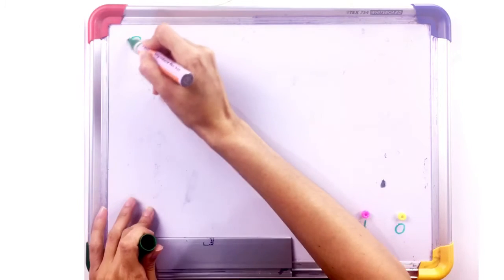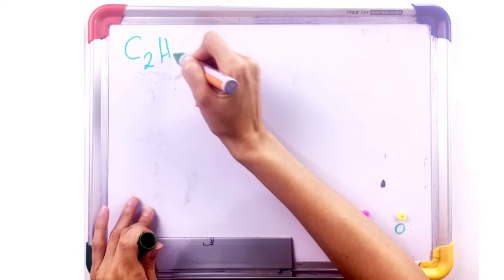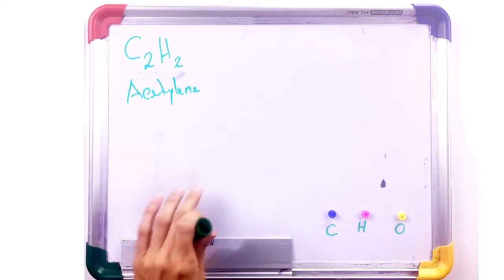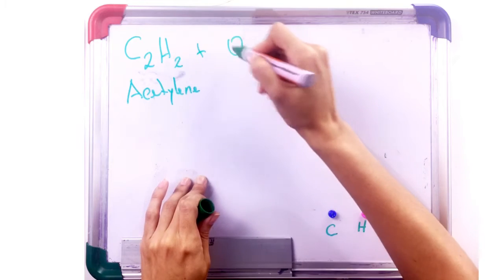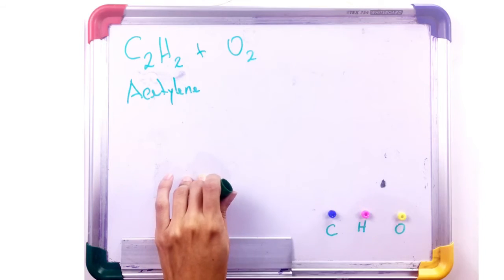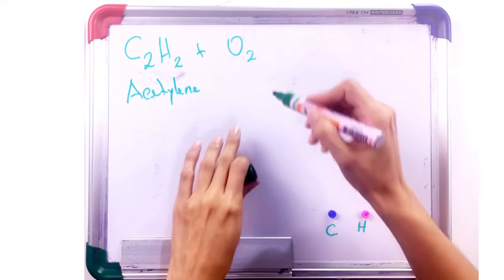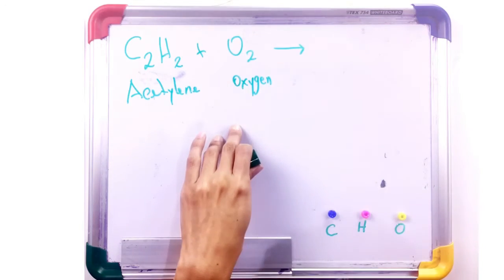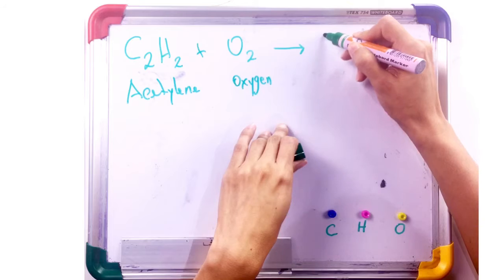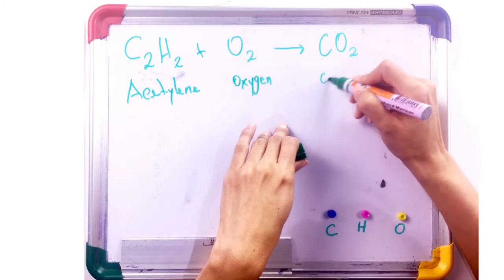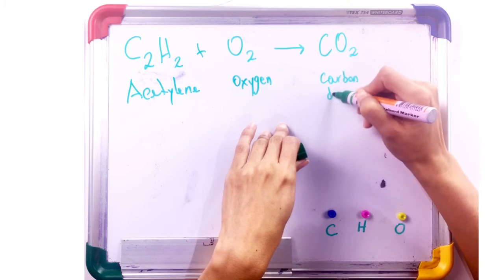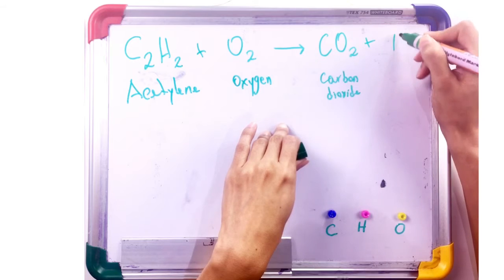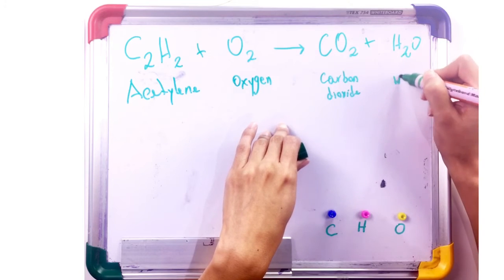Acetylene is written as C2H2. So we have acetylene. It's going to be reacting with oxygen. Oxygen, as you know, is a diatomic element so it's written as O2. So we have oxygen. Now this reaction will yield carbon dioxide and water, H2O.